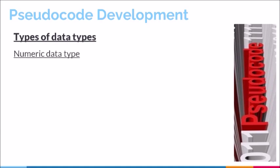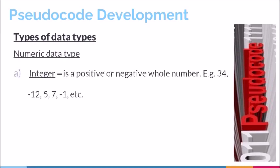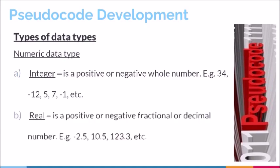The first category is referred to as numeric data types. Within numeric data types, we have what are referred to as integers. An integer is a positive or negative whole number. Another numeric data type is real. Real is a positive or negative fractional or decimal number, so all your decimal values will be classified as real.